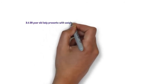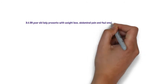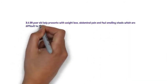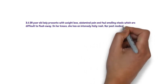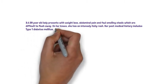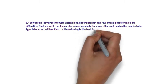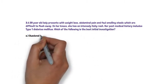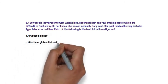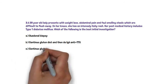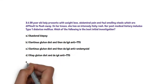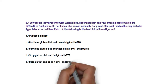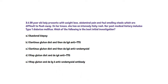Moving on to the third question. This concerns a 29-year-old lady who presents with weight loss, abdominal pain and foul-smelling stools which are difficult to flush away. On her knees she has an intensely itchy rash. Her past medical history includes type 1 diabetes. Which of the following is the best investigation to perform? Options: A. Duodenal biopsy, B. Continue gluten diet and do IgA anti-TTG, C. Continue gluten diet and do IgA anti-endomysial antibody, D. Stop gluten diet and do IgA anti-TTG, E. Stop gluten and do IgA anti-endomysial antibody.